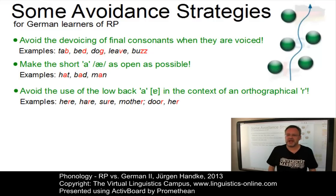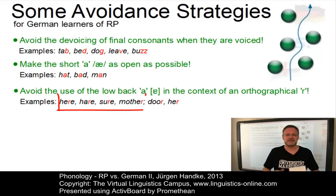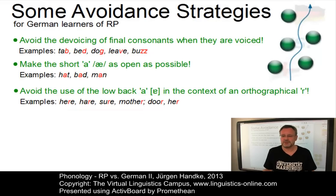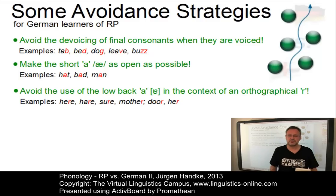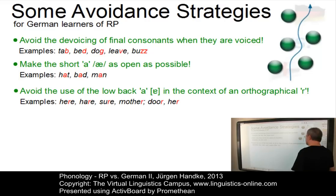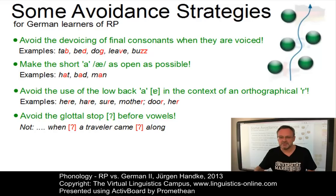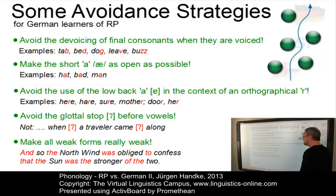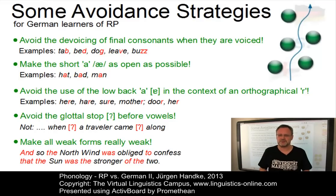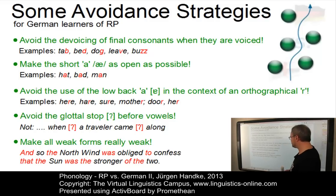Avoid the use of the low back A in the context of an orthographical R. Say HERE, HER, SURE, and MOTHER — use a true schwa in these contexts, and drop the R altogether in monophthongal contexts such as DOOR and HER. Then we have obligatory principles of connected speech: avoid the glottal stop before syllable-initial vowels — do not say 'when a traveller came along' with glottal stops, but 'when a traveller came along'. And finally, make all weak forms deliberately extra weak.